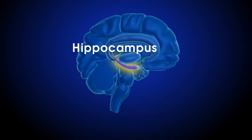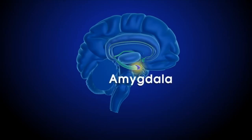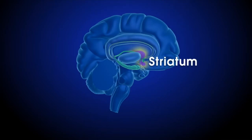One limbic system structure, the hippocampus, helps us form memories and learn. The amygdala contributes to emotions. The striatum is crucial to forming habits, routines of behavior that we tend to do without thinking, and processing reward.